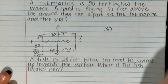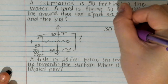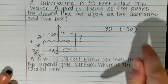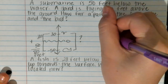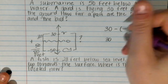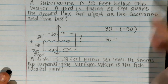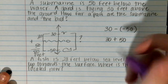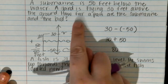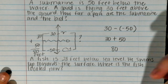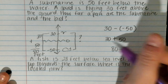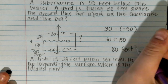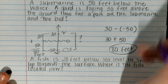Our larger number is positive 30 minus negative 50. I rewrite it by adding the opposite: keep the first number, change minus to plus, and the opposite of negative 50 is positive 50. So 30 plus 50 is 80. Since we're talking about distance it stays positive, so the solution is 80 feet — they are 80 feet apart.